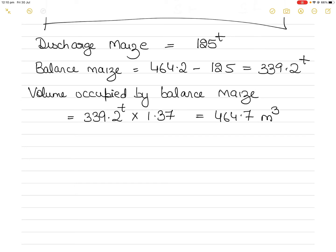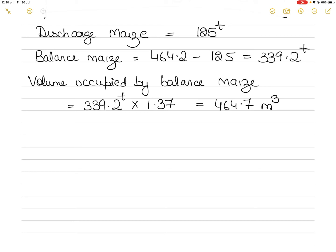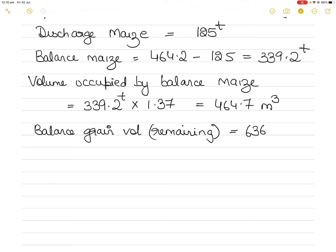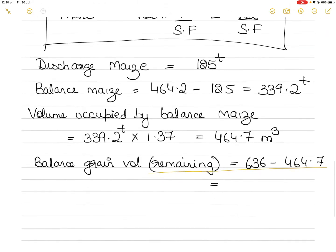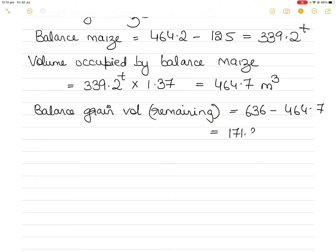Therefore, the balance grain volume remaining is 636 minus 464.7, which equals 171.3 cubic meters. That is the remaining grain capacity available for loading the bagged maize.